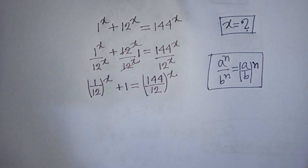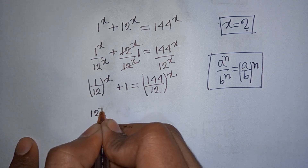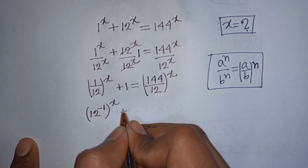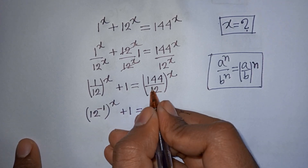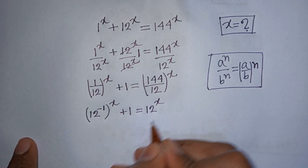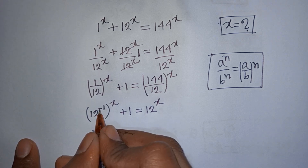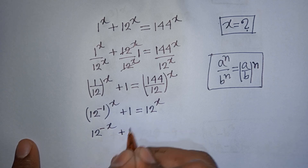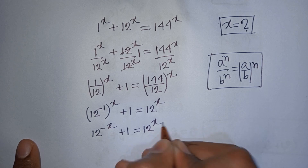Now, 1/12 can be written as 12 to the power of negative 1, then bracket to the power of x plus 1, is equal to 144 divided by 12, which is 12, to the power of x. So we have 12 to the power of negative x, then plus 1, equals 12 to the power of x.